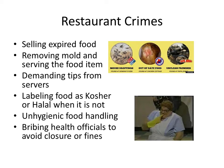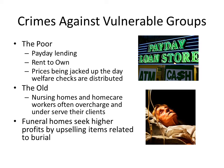If you're not Orthodox Jewish or Orthodox Muslim, it's probably not a big deal. But if you are Orthodox, this is a huge issue. Other restaurant crimes include unhygienic food handling and bribing health officials to avoid closures or fines. Pictures shown here include mouse droppings found at a Domino's Pizza, out-of-date food found at a Chicken Cottage restaurant in England, and unclean premises found at a Papa John's.